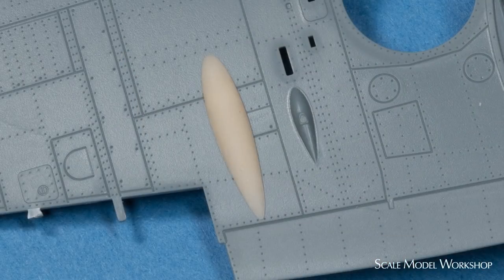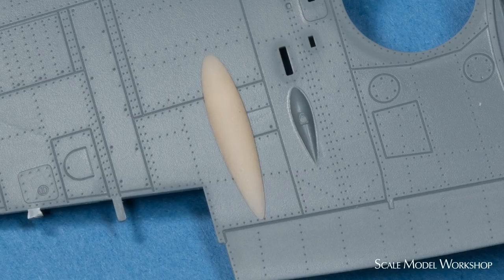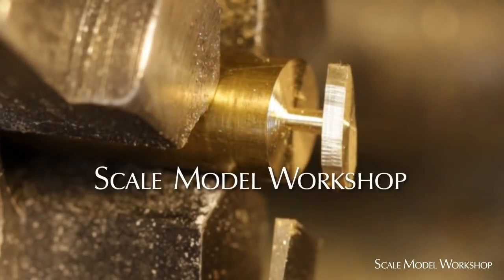But that method doesn't work out very well when you need well-rendered, smaller detail like the blister on the underside of the wing. Welcome to Scale Model Workshop.